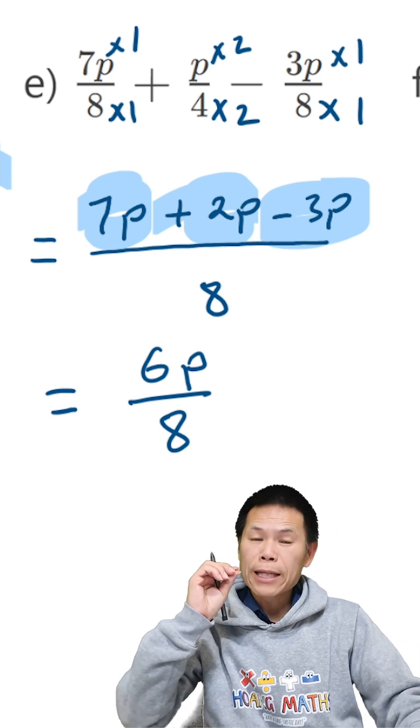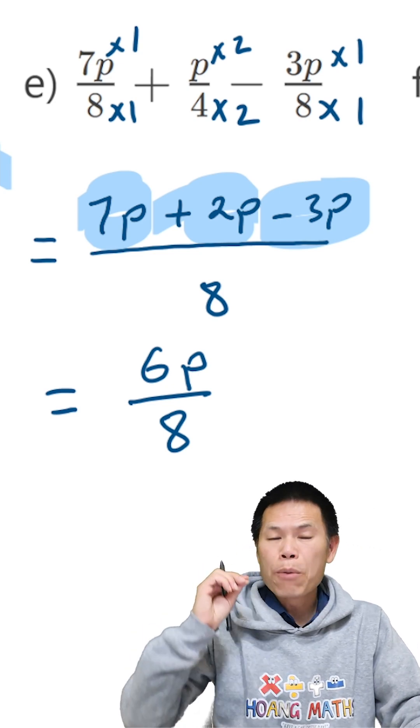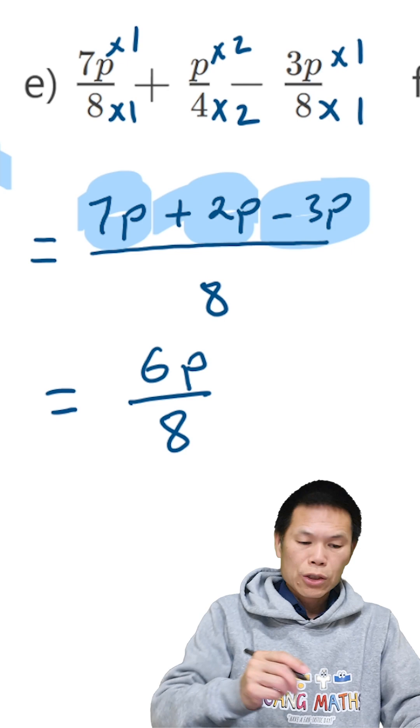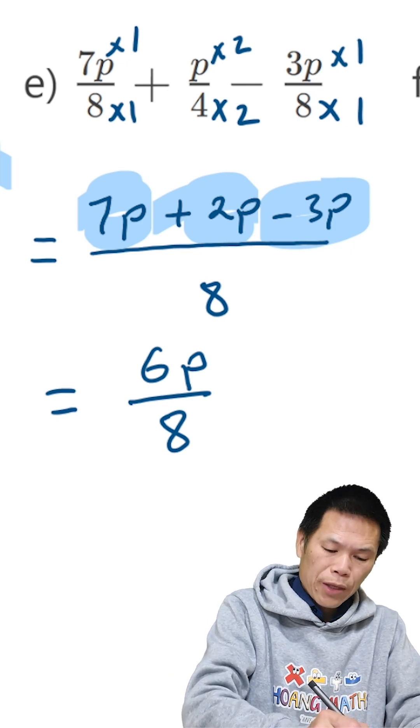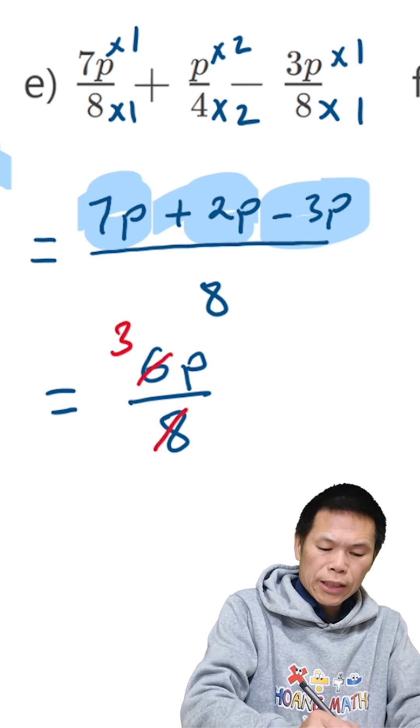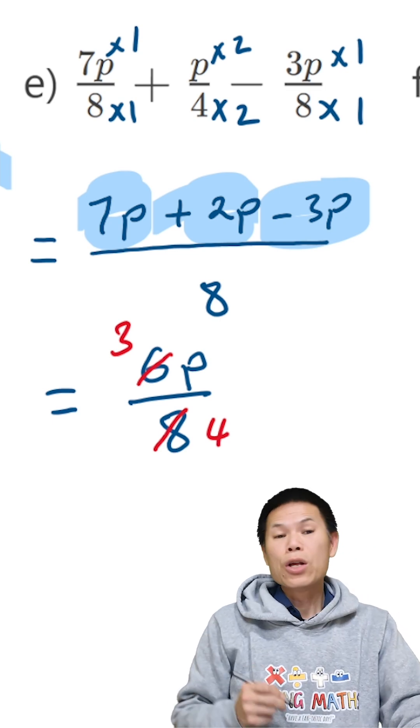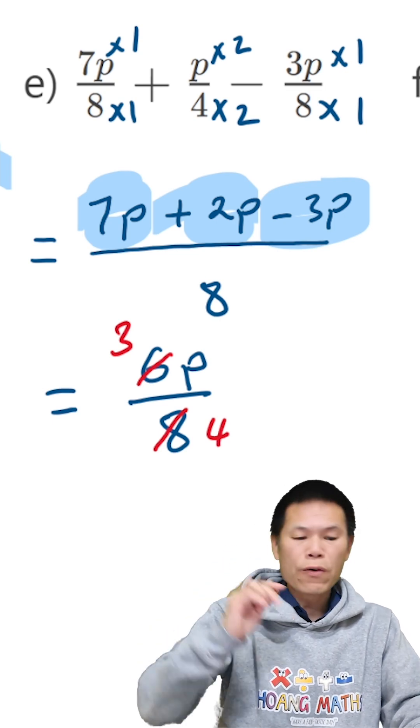There you go. But then 6 and 8 can divide by 2. So I can simplify further. This divide by 2, give me 3. This divide by 2, give me 4. So 3P over 4.